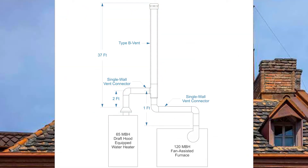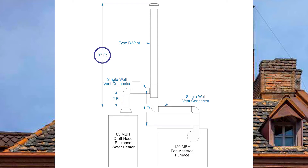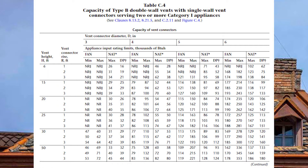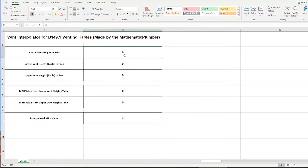Let's get more practice with the calculator using a second example. I have a 120 MBH fan-assisted furnace with a 1-foot vent connector rise, and a 65 MBH draft-hood-equipped water heater with a 2-foot vent connector rise and a 37-foot vent. The vent connectors are single wall and the vent is double wall, so we should be using Table C4. In Table C4 there is no 37-foot vent height — there's a 30-foot and a 50-foot, so let's enter those into the calculator.